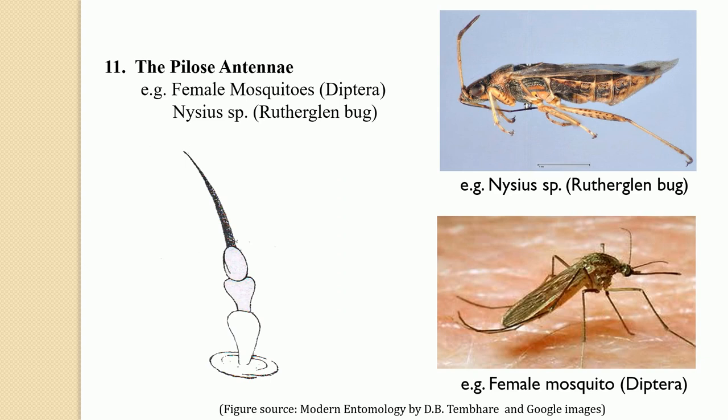The next type is pilose antennae. In pilose antennae, the flagellum looks like a shaft of flexible hair — all the segments are alike, fine and tubular, but without any kind of process on the segments. This kind of antennae is found in female mosquitoes and also in the genus Nepa, which shows the presence of such pilose antennae.